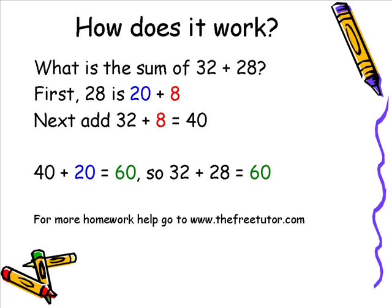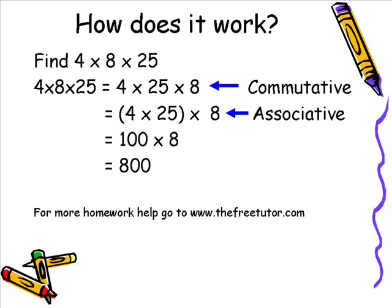Take another example: 4 times 8 times 25. First, we change the order using the commutative property of multiplication — instead of 4 times 8 times 25, we say 4 times 25 times 8. Then we use the associative property to group 4 times 25, which we know is 100. We're left with 100 times 8, which is 800. So 4 times 8 times 25 equals 800 — using both the commutative and associative properties of multiplication to solve a problem quickly in our heads.